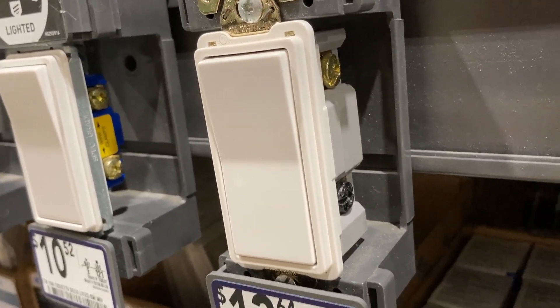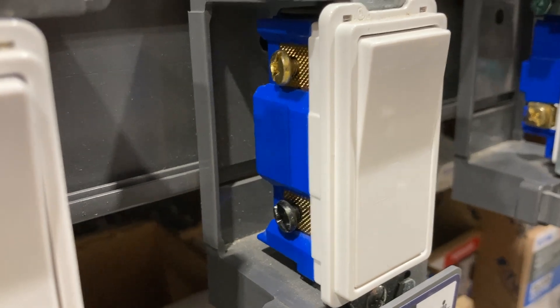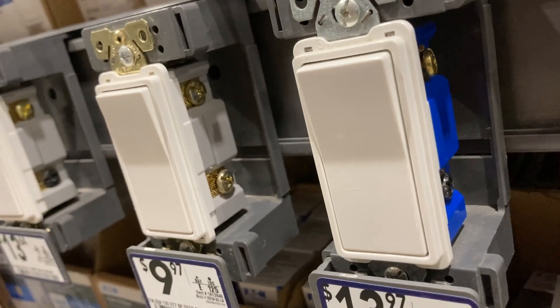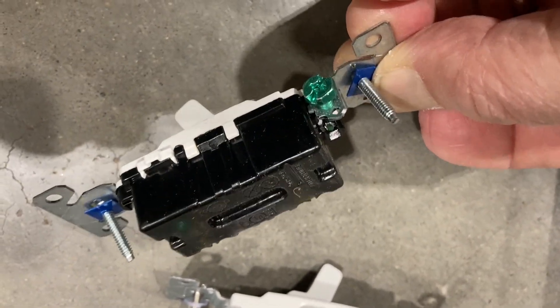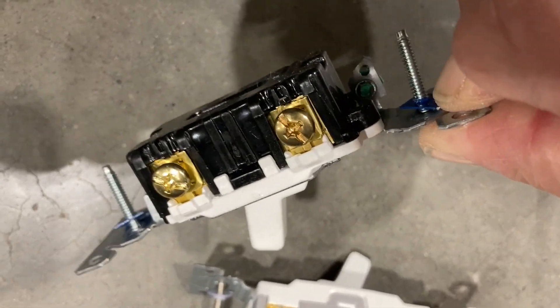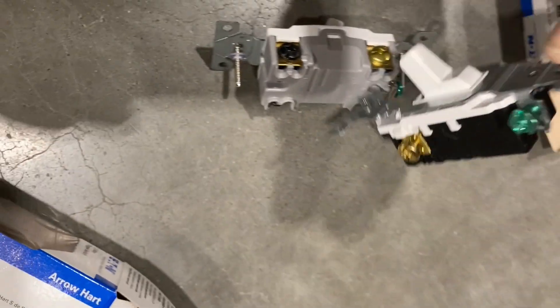Here I am at a Home Depot just looking at some light switches to show you what these things look like from the back side. A regular on-off switch, a single pole switch, just has two screws on it. You would not use that on a four-way system.